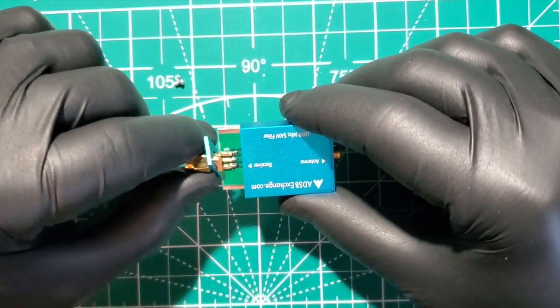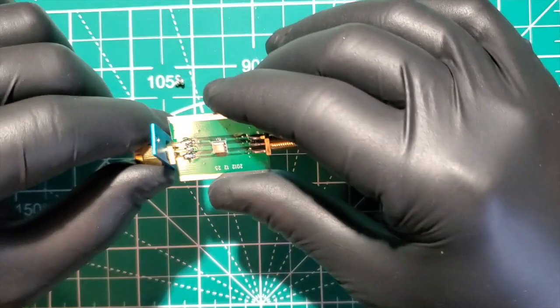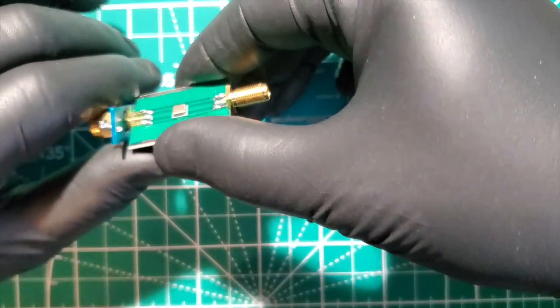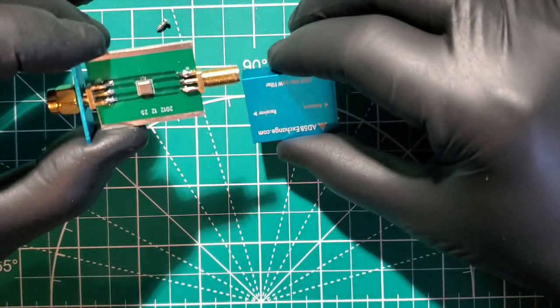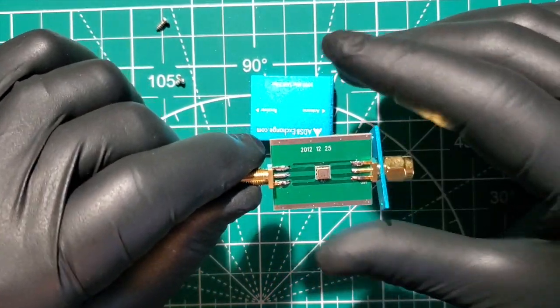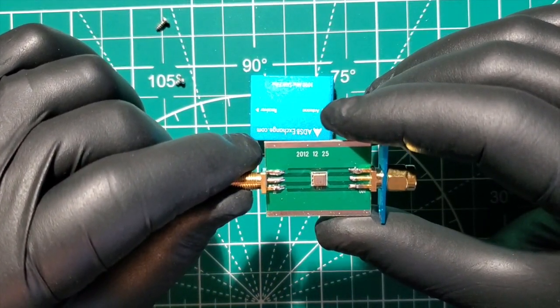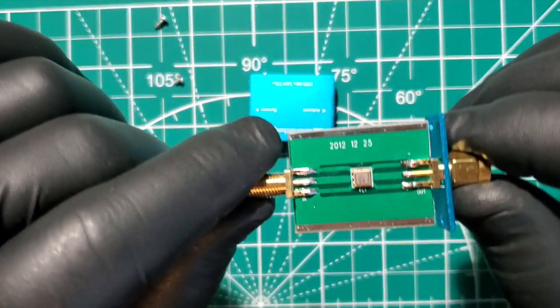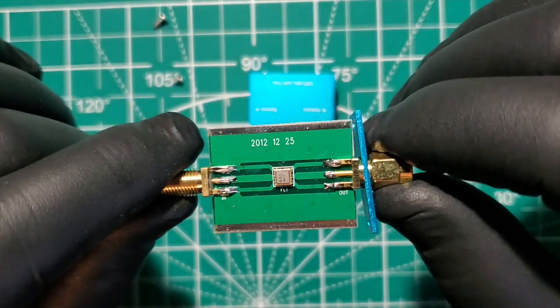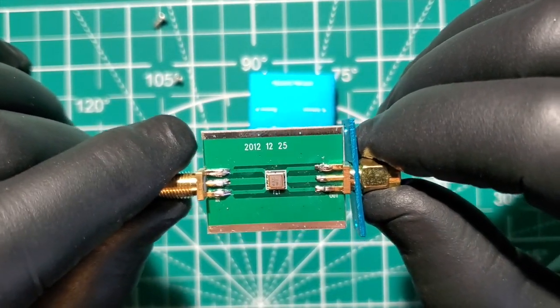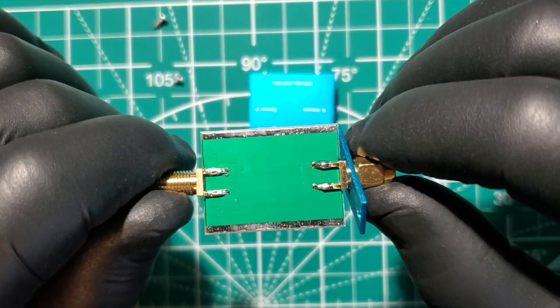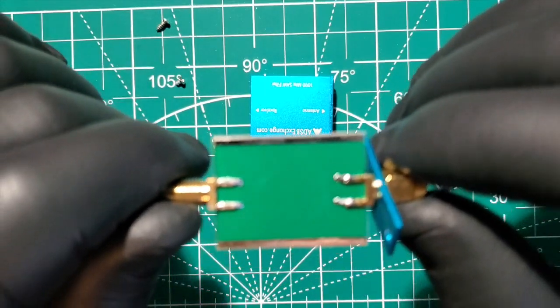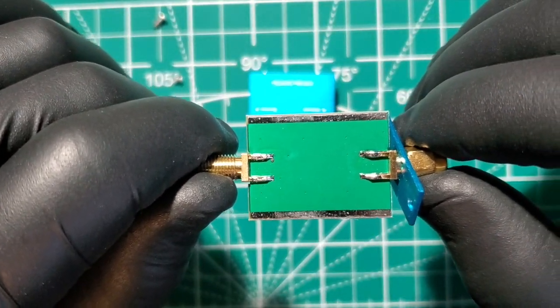So we'll back this up, take that screw out. If we turn this guy around, we have the filter. We have our IN on the left and OUT on the right. There's what the backside looks like.